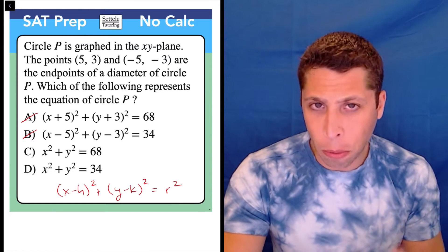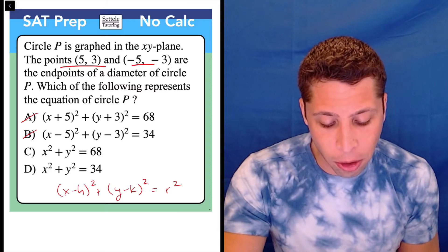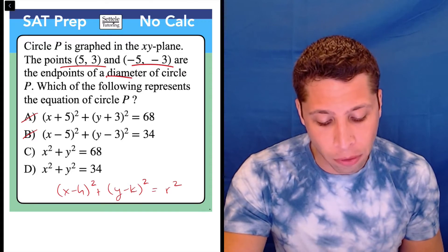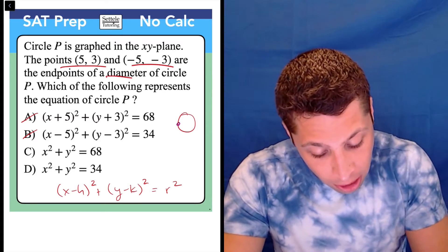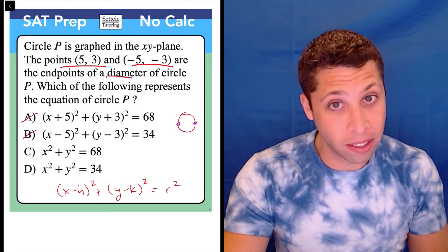If we look at this, they're telling us two points, but neither of these points is the center. They're both points that are on the diameter of a circle. Basically, they're points that would be like here and here, not the point in the center.